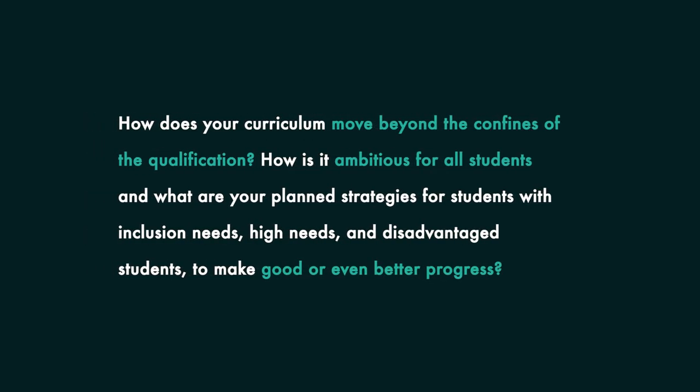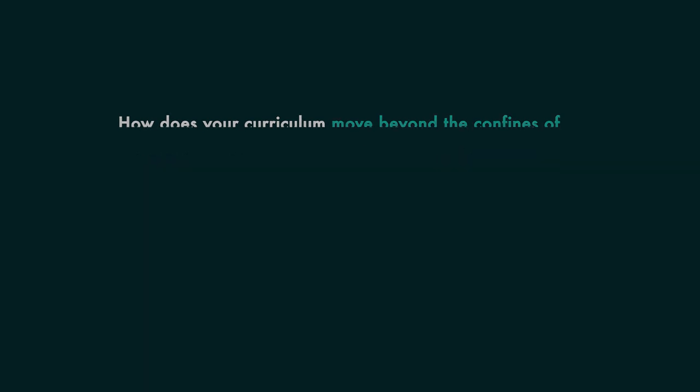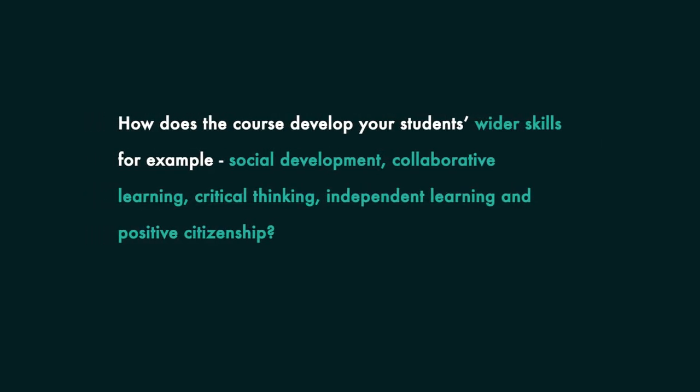How does the curriculum move beyond the confines of the qualification? How is it ambitious for all students? And what are your planned strategies for students with inclusion needs, high needs and disadvantaged students to make good or even better progress? How does the course develop your students' wider skills — for example, social development, collaborative learning, critical thinking, independent learning and positive citizenship?